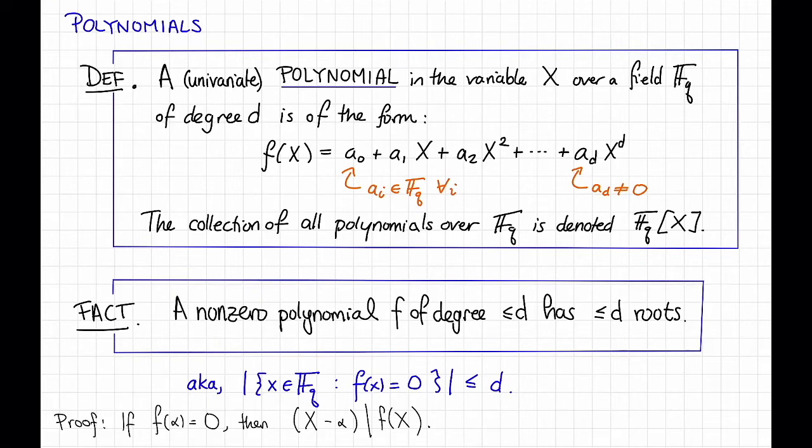But that means that if f(x) had, let's say, d+1 roots, say alpha_1 up through alpha_{d+1}, then the product of all of those polynomials, (x - alpha_i), is going to divide f(x). But this is a degree d+1 polynomial, so that means that f better have degree at least d+1.